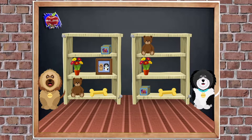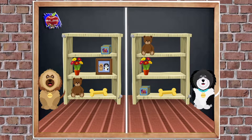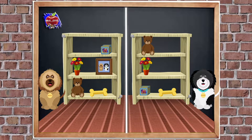Let's play a game of spot the difference. We've got two sets of shelves — one on Betty's side and one on Barney's side. Look carefully at what's on Betty's shelves. We've got a cube on the top shelf, a flower pot and a picture frame next to each other on the middle shelf, and a teddy and a bone next to each other on the bottom shelf.